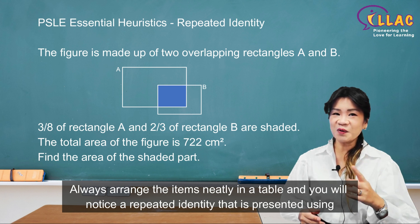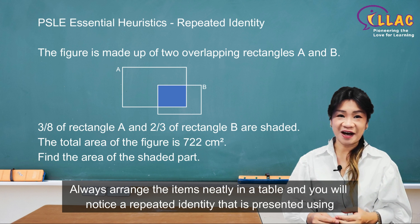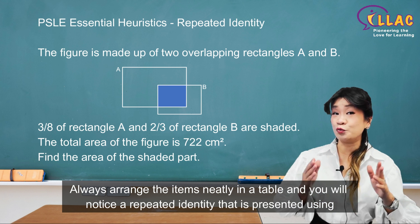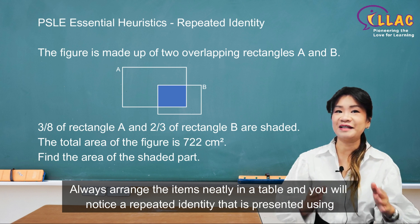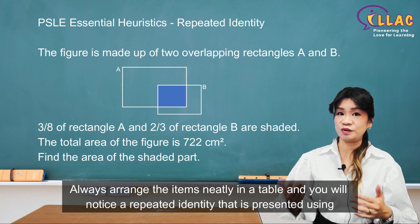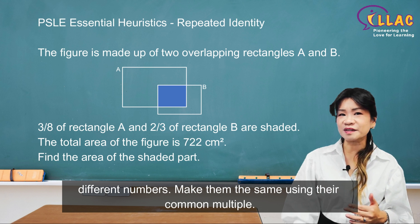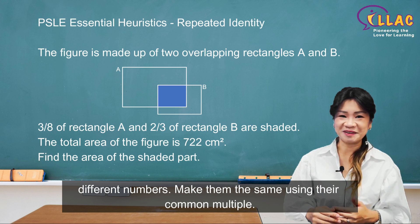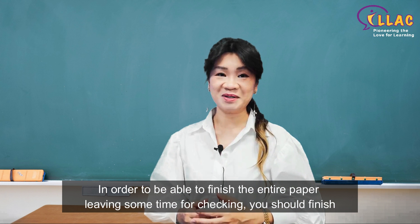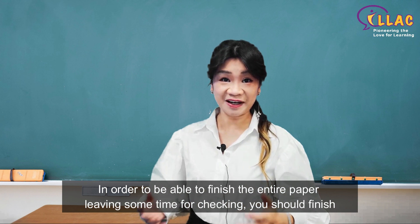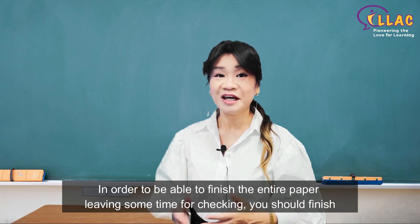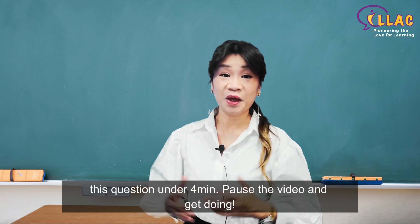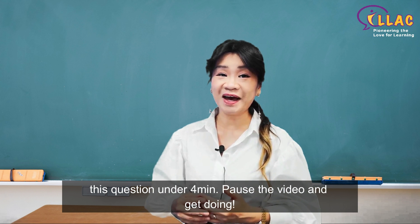Always arrange the items neatly in the table and you will notice a repeated identity that is presented using different numbers. Make them the same using their common multiple. In order to finish the entire paper leaving some time for checking, you should finish this question under 4 minutes. Pause the video and get doing!